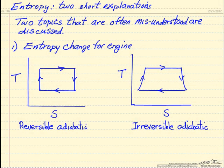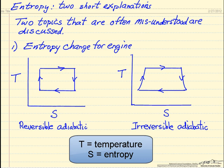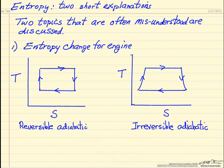Here I want to discuss two topics that are often misunderstood about entropy. First, let's look at the entropy change for an engine. What I represent here is on a temperature-entropy diagram. We have a Carnot cycle here, where we go around the cycle in the direction indicated by the arrows. We have adiabatic steps — these two steps are adiabatic and reversible, so there's no entropy change for this cycle.